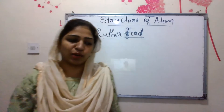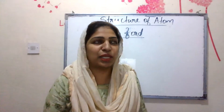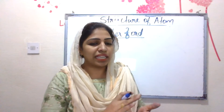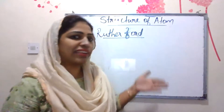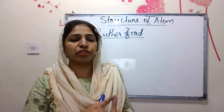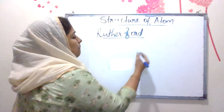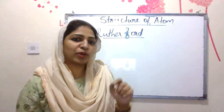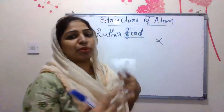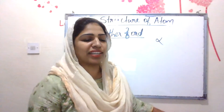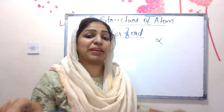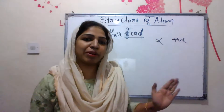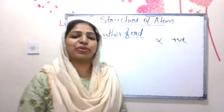Rutherford's alpha scattering experiment gave us the Rutherford Model of Atom. In the experiment, there are two key components. One is a thin gold foil. Two is alpha particles. Alpha particles consist of two protons — they are positively charged particles with high energy. This alpha particle beam was directed at the thin gold foil as a probe for the experiment.